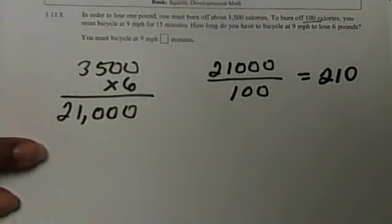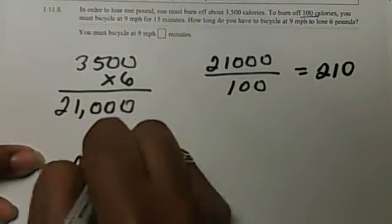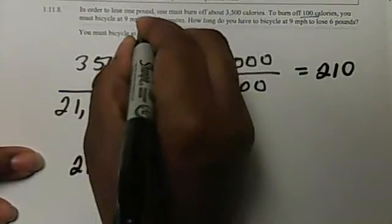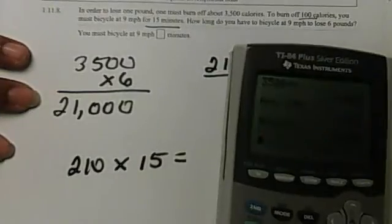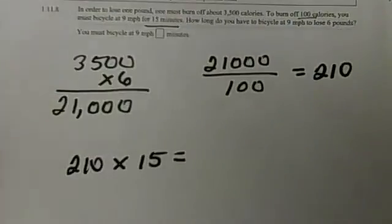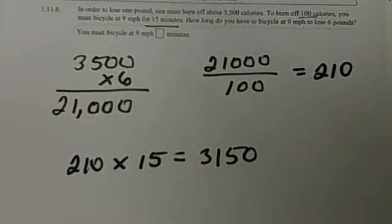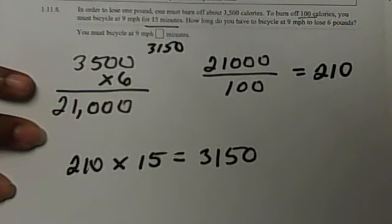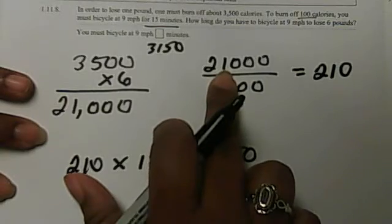And then we need to know how long it's going to take to do these sets. So we take our 210 and multiply that by 15, right? 15 minutes. Multiply that by 15 and we're going to get 3,150. So we need 3,150 minutes biking at 9 miles per hour in order to burn off 21,000 calories to lose 6 pounds.